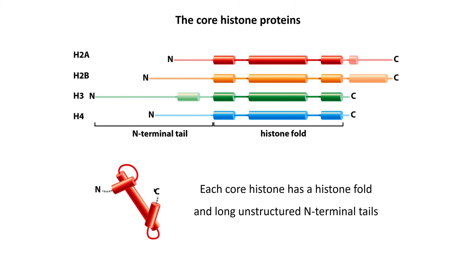There are four core histone proteins, and two molecules of each are present in one nucleosome: histone H3, histone H4, H2A, and H2B. Each of these core histones contains a classic core histone fold. All of them contain these long, unstructured N-terminal tails and much shorter C-terminal tails.